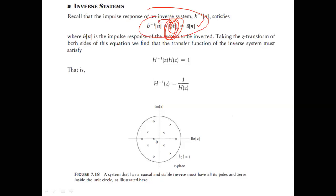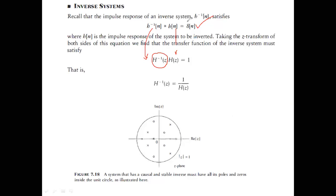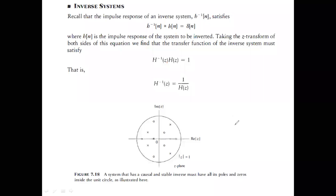H(n) is the impulse response — apply an impulse to the system and get the impulse response. If you apply that to the inverse system you should get back the impulse. In the Z-domain: H(z) · H⁻¹(z) = Z{δ(n)} = 1, so H⁻¹(z) = 1/H(z). This is easy to derive.